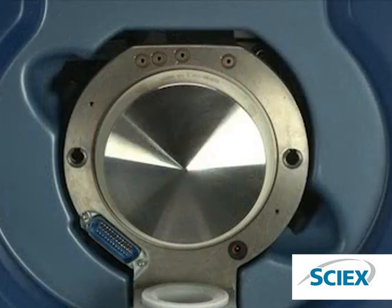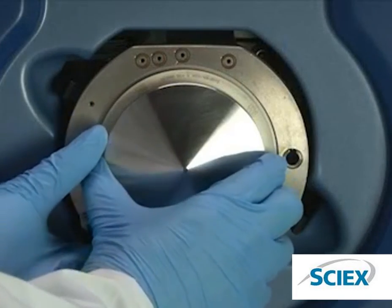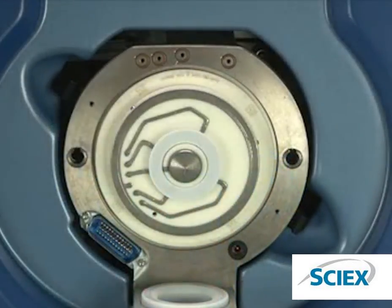Before removing the current plate from the instrument, make sure that the interface is at room temperature. With two hands, pull the current plate back from the body of the mass spectrometer. Never use tools to remove the current plate as this will break the ceramic orifice plate.